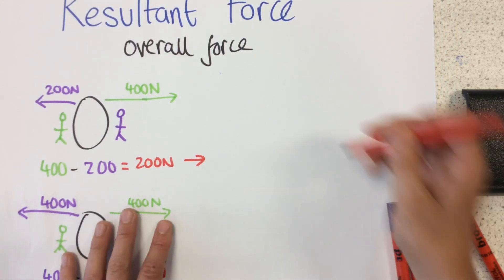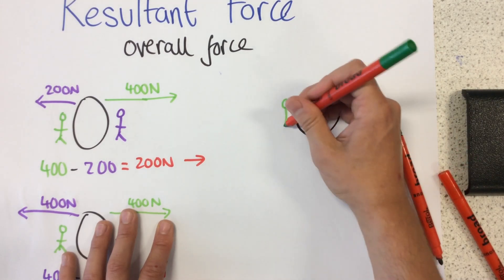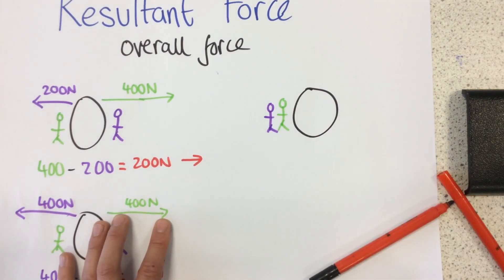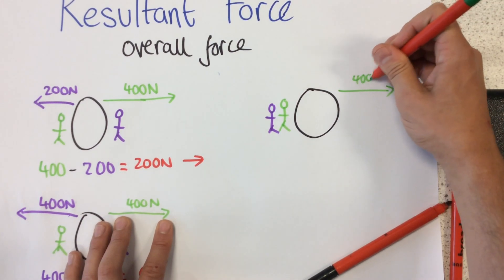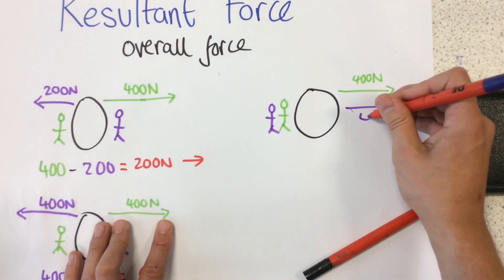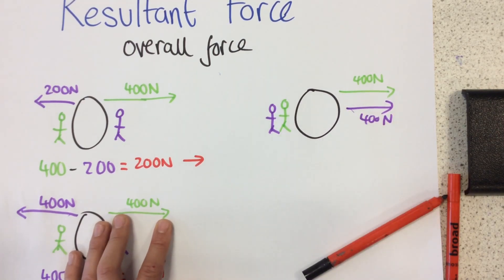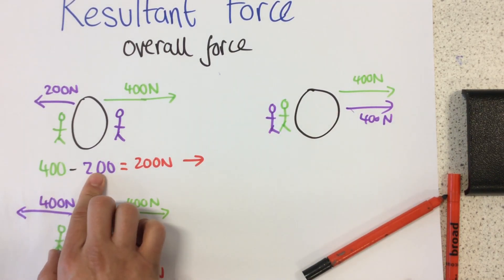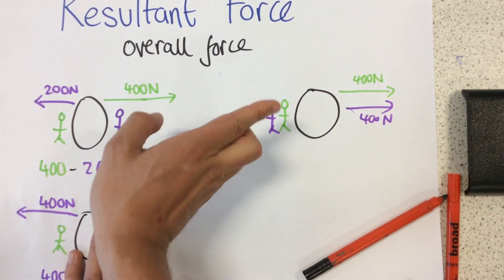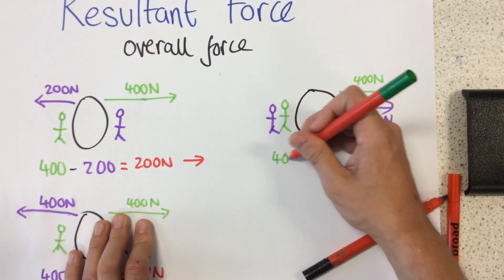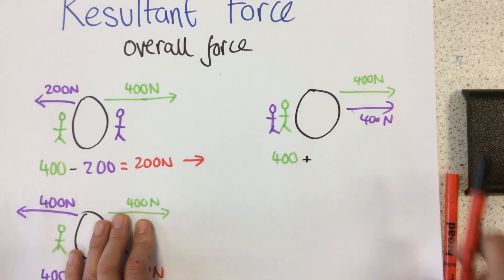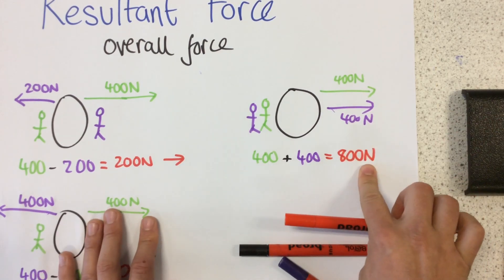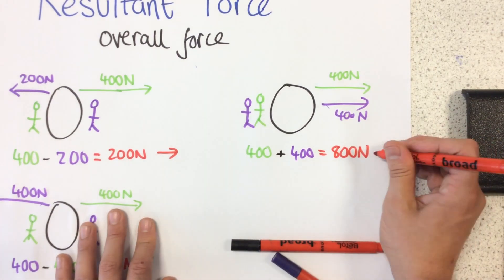Next example. Now both of the characters have decided to push the rock from the same side, so they're both applying a force in the same direction. What is the resultant force going to be? Because the force is applied in the same direction, instead of taking one away from the other, we're going to add them together. So this time the resultant force is 400 plus 400 newtons, which equals a resultant force of 800 newtons in that direction.